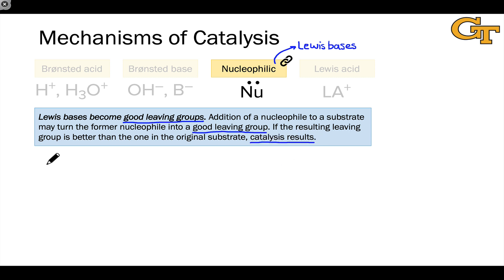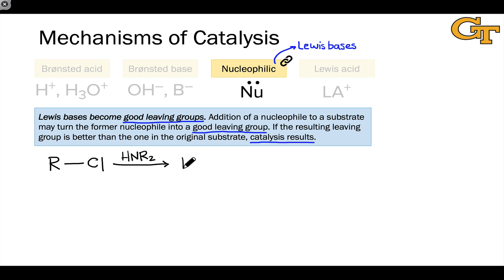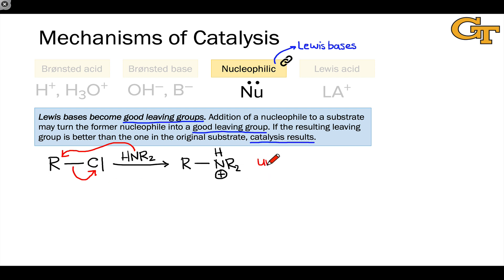So let's look at an example of this in the context of the SN2 reaction. Let's take an alkyl chloride reacting with some nucleophile, say a secondary amine, to form an alkylated product — an alkylated ammonium ion like this. The uncatalyzed process is just a simple SN2 elementary step, in which the amine nitrogen donates a lone pair to the electrophilic carbon, or R group, and Cl departs with a pair of electrons.